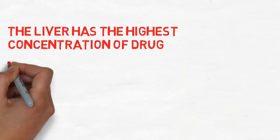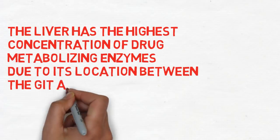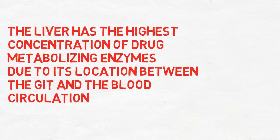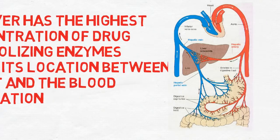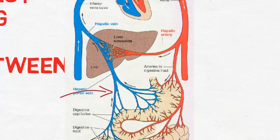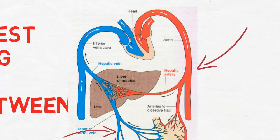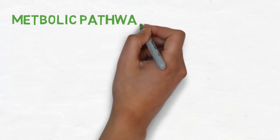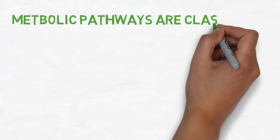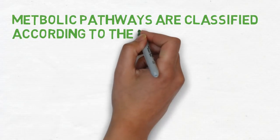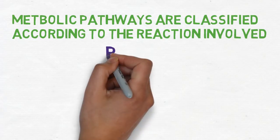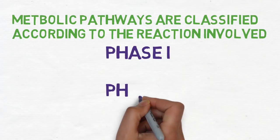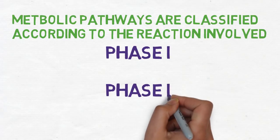The liver has the highest concentration of drug metabolizing enzymes because of its location between the gastrointestinal tract and the systemic circulation. Based on the reactions involved in the metabolism process, we can classify the metabolic pathways into phase 1 metabolism and phase 2.